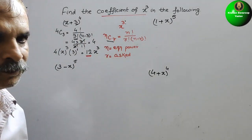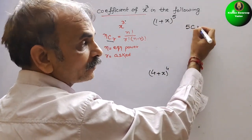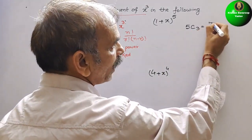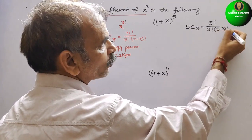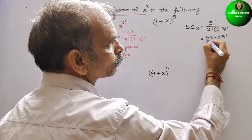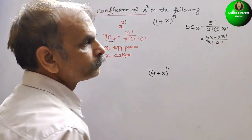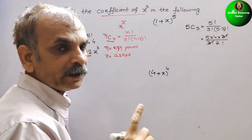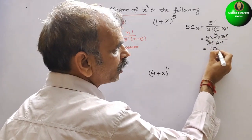Just we will understand with our second question. Here they have given N is 5, so we will write 5 C 3, since R gave us 3. That is nothing but 5 factorial by 3 factorial and 5 minus 3 factorial. So if you solve this, 5 factorial is 5 into 4 into 3 factorial, by 3 factorial and 2 factorial. 3 factorial cancels, 2 factorial is 2 into 1, that is 2. So 2 and 4 gives 2, meaning your initial coefficient is 10.